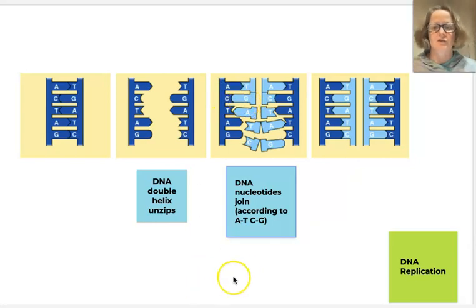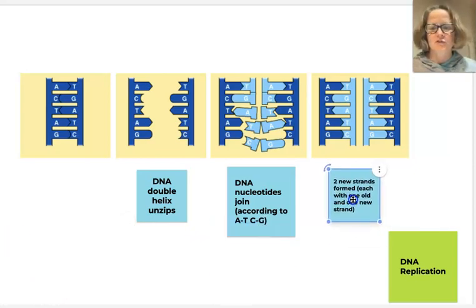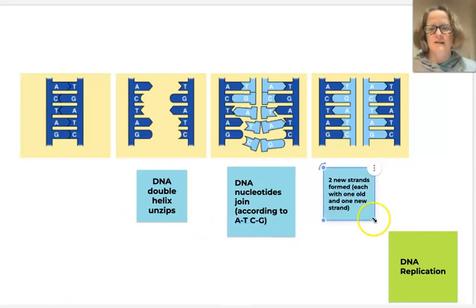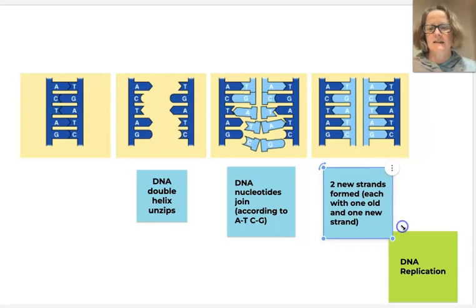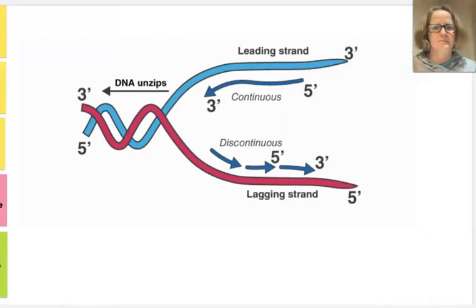The third step in DNA replication is to form two new strands, each strand consisting of one of the original or old strands and one new strand. This is known as semi-conservative replication.